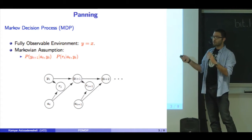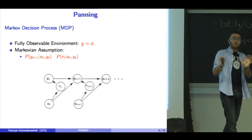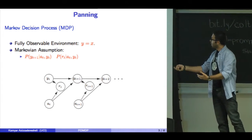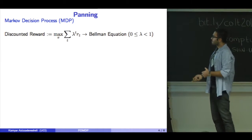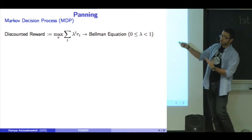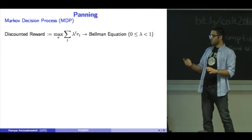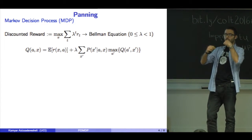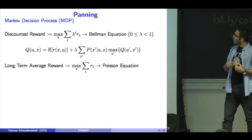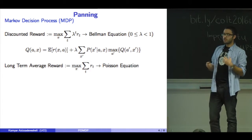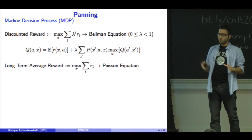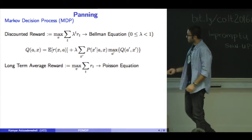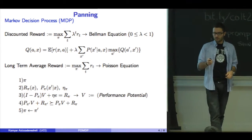In MDPs, at each time step we choose an action, transition to a new state, and receive reward. If the objective is discounted reward, we can use the Bellman equation—a dynamic programming iterative algorithm. If the objective is cumulative or long-term average reward, we apply the Poisson equation. All these methods are well-studied.